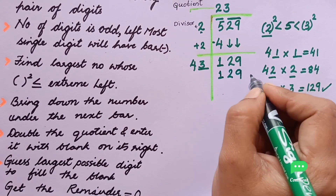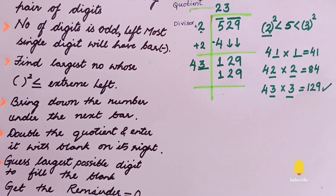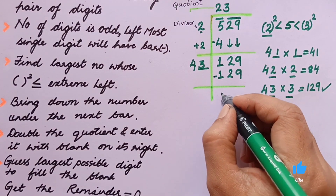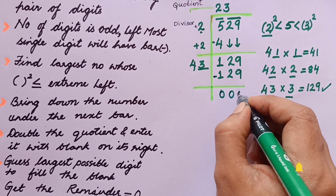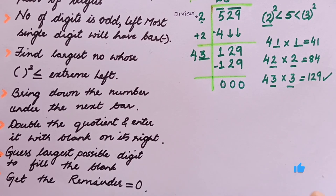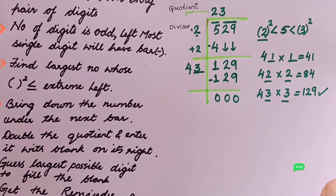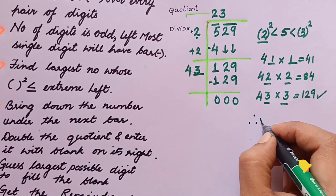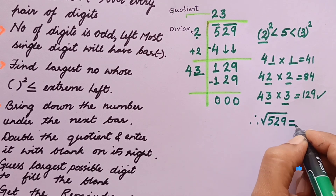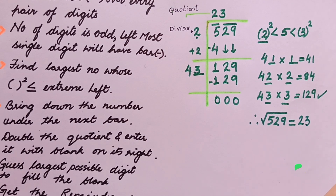43 times 3 equals 129. I write 129 here, draw a line, and subtract. After subtraction the remainder is zero. Once the remainder is zero, we are done. Therefore, the square root of 529 is equal to 23.